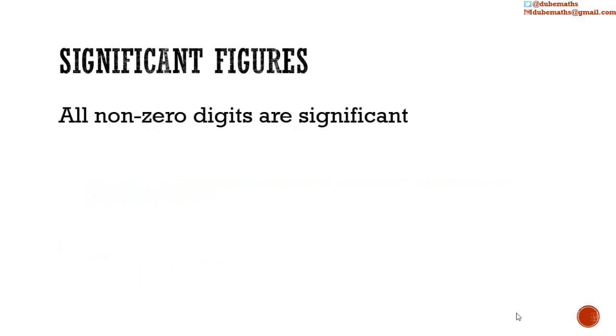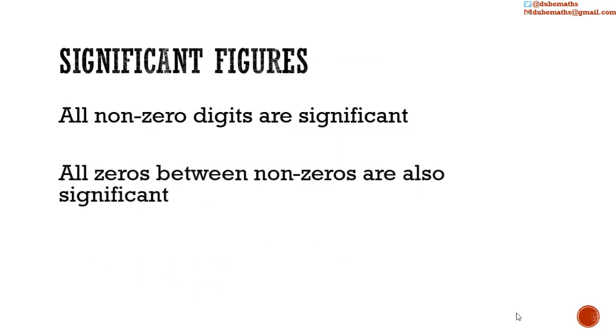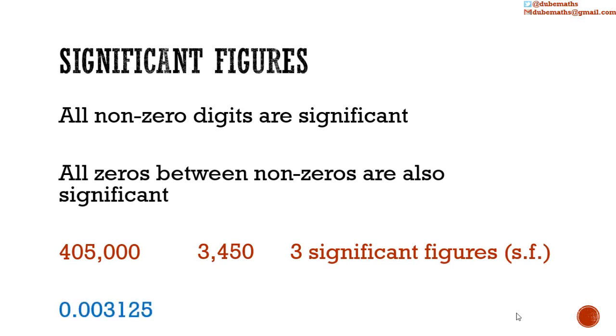All non-zero digits are significant. All zeros between non-zero digits are also significant. Thus, 405,000 has 3 significant figures. So does 3,450. 0.003125 has 4 significant figures, and 6.00035 has 6 significant figures.